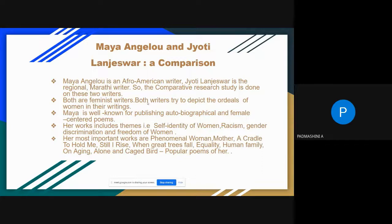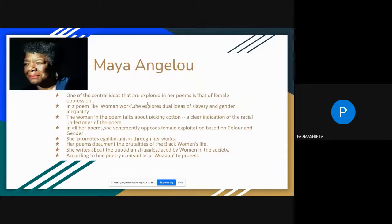Maya's works include themes such as self-identity of women, racism, gender discrimination, and freedom of women. Maya's most important works are Phenomenal Woman, Mother, A Cradle to Hold Me, Still I Rise, When Great Trees Fall, Equality, Human Family, On Aging, Alone, and Caged Bird, which are some of her most popular poems.